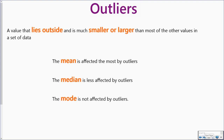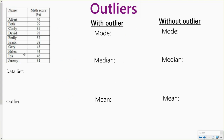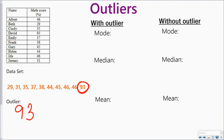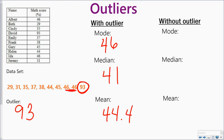Let's take a look at how outliers affect our numbers. Here I have my data set and I'll order it from least to greatest. My outlier is what kind of doesn't fit in my data set, so 93 would be considered my outlier. If I figure the mode with the outlier, 46 shows up the most — two times — so my mode is 46. My median, counting towards the middle, is 41. And then my mean, adding up all of the numbers and dividing by how many there are, gives me 44.4. That's with the outlier.